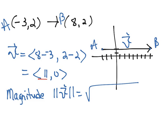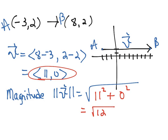But note, since we already have our vector in component form, when you subtract the x's you're going to get 11, so 11 squared. When you subtract the y's you're going to get 0 squared. So we get the square root of 121 and so the magnitude is 11.